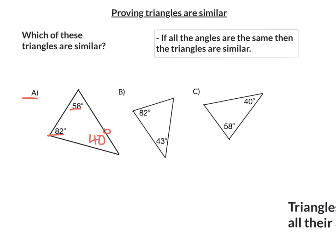Let's do the same for the next one. For B, 82 and 43, add them and take them away from 180. We're going to get 55. And lastly, C, if we do 58, add 40, take that away from 180, we get 82.